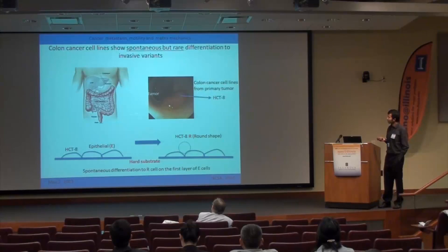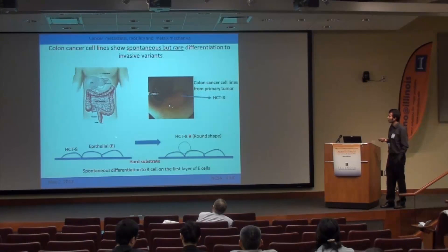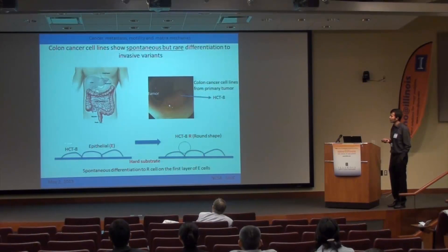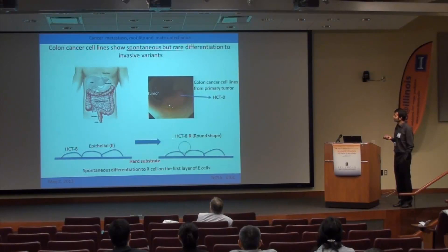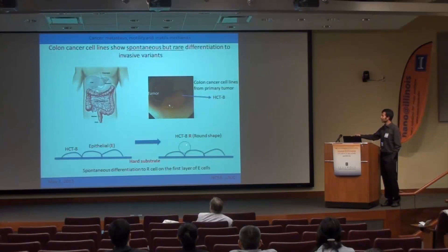In this work, they plated the HCT8 cell line on hard polystyrene dishes. These cells form an epithelial monolayer on the polystyrene dishes, and eventually a very few percentage of them go through a spontaneous differentiation process — morphologically distinct cells called the HCTR rounded variant of these original epithelial cells.